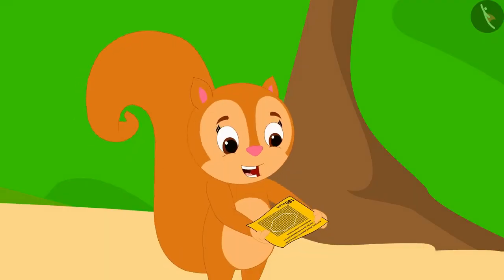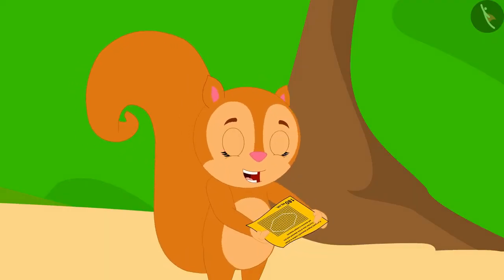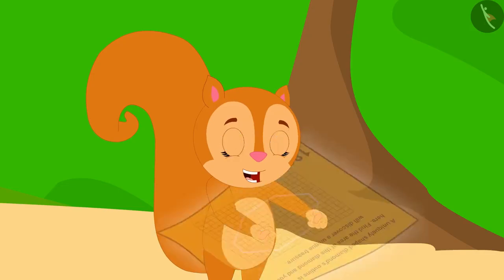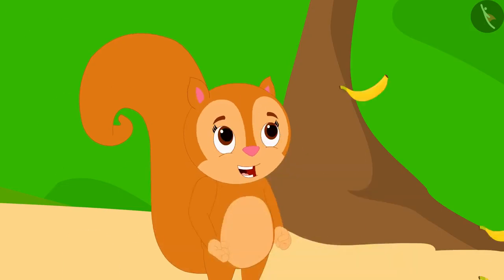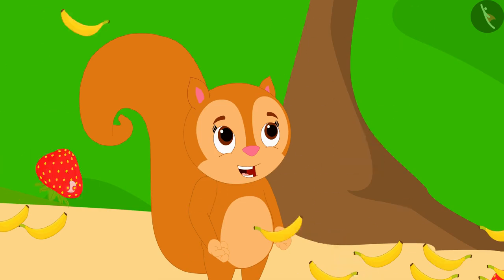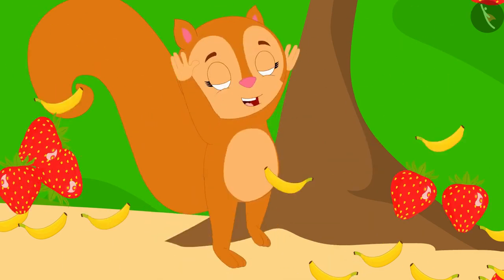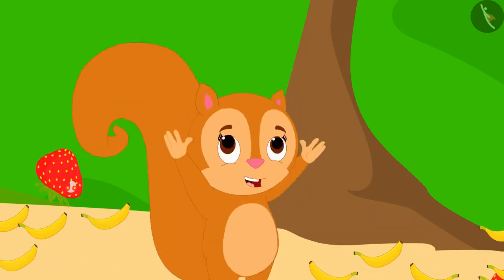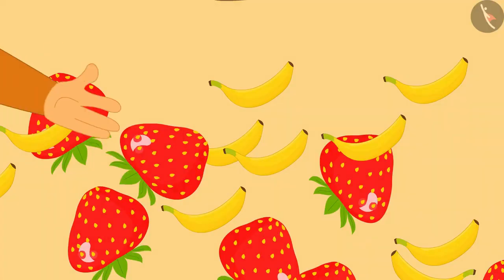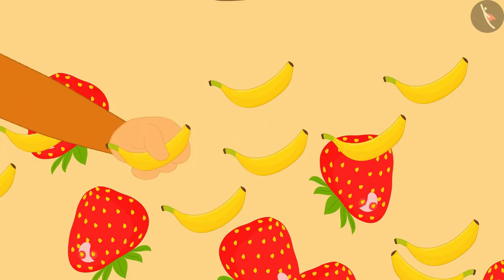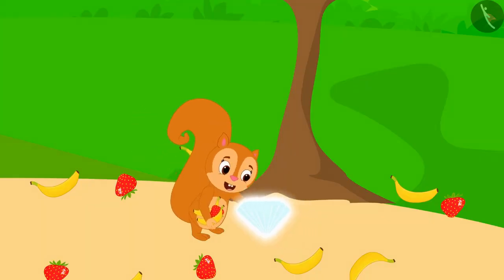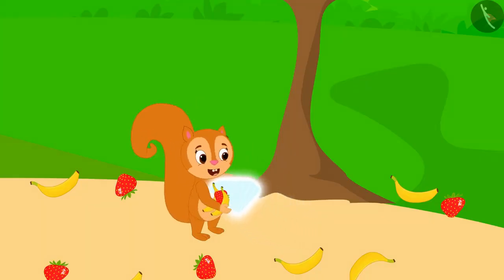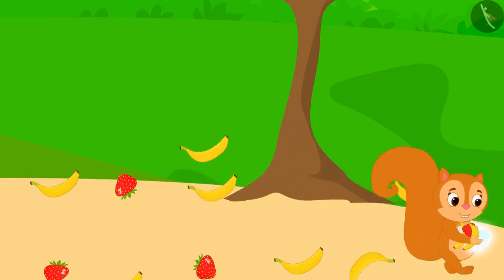As soon as Chanda wrote this answer on that paper, the paper disappeared and fruits began to shower from the sky. Chanda became very happy. She gathered some fruits, took her diamond, and happily walked towards her house.